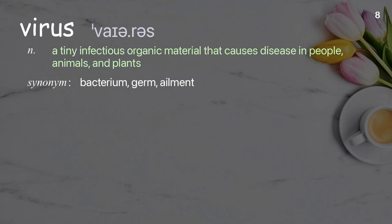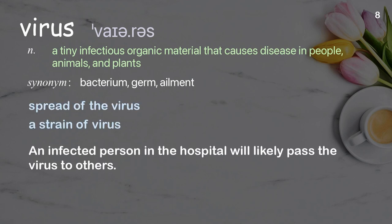Virus. A tiny infectious organic material that causes disease in people, animals, and plants. Examples: spread of the virus, a strain of virus. An infected person in the hospital will likely pass the virus to others.